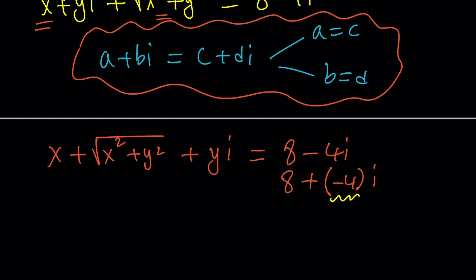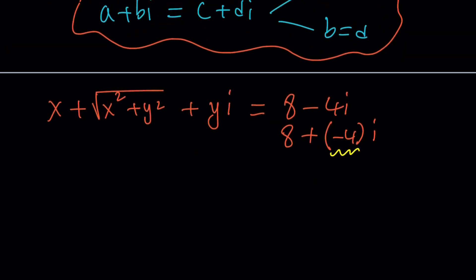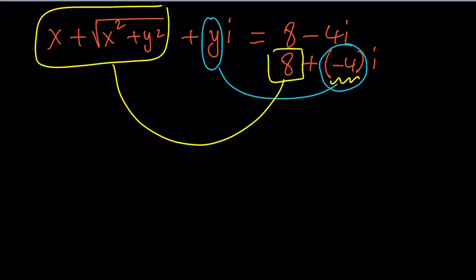Okay. So, now here's what we're going to do. We're going to set the real parts equal to each other. Real part equals the real part. And the imaginary part equals the imaginary part. Make sense? So, we've got two equations. Let's go ahead and establish those equations. The first equation gives me X plus the square root of X squared plus Y squared equals 8. And the second equation simply tells me that Y is equal to negative 4.